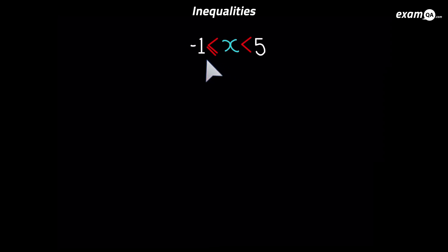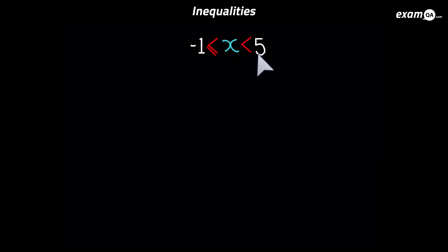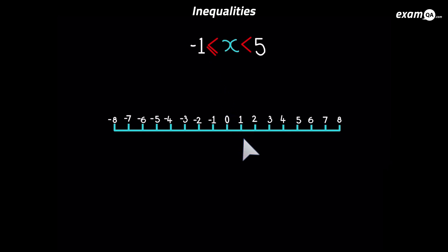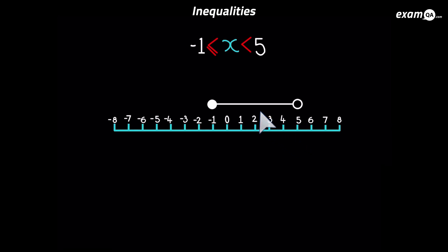This one means x is between minus one and five. We include minus one because it has the 'or equal to' sign, but we don't include five because it doesn't. So that's numbers like minus one, zero, one, two, three, four — and decimal numbers too — but not five. On the number line, put a filled circle on minus one, an open circle on five, and join them up to show all the numbers between them.